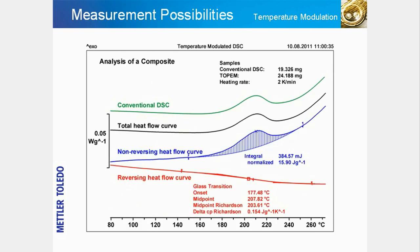In practice, incomplete curing as a result of vitrification is one of the most frequent causes of failure in composite materials. If an incompletely cured material is heated in a DSC, a so-called post-curing peak is observed immediately after the glass transition. The glass transition, post-curing enthalpy, and the original degree of cure can be determined by performing a temperature-modulated DSC experiment.